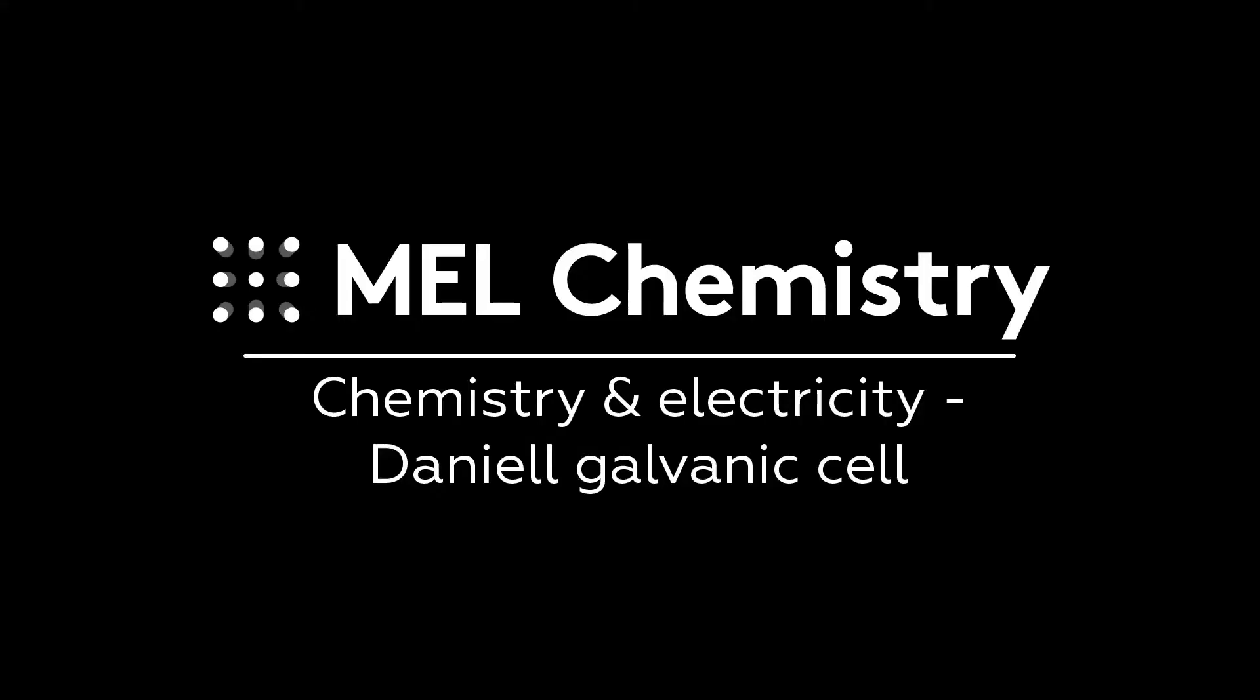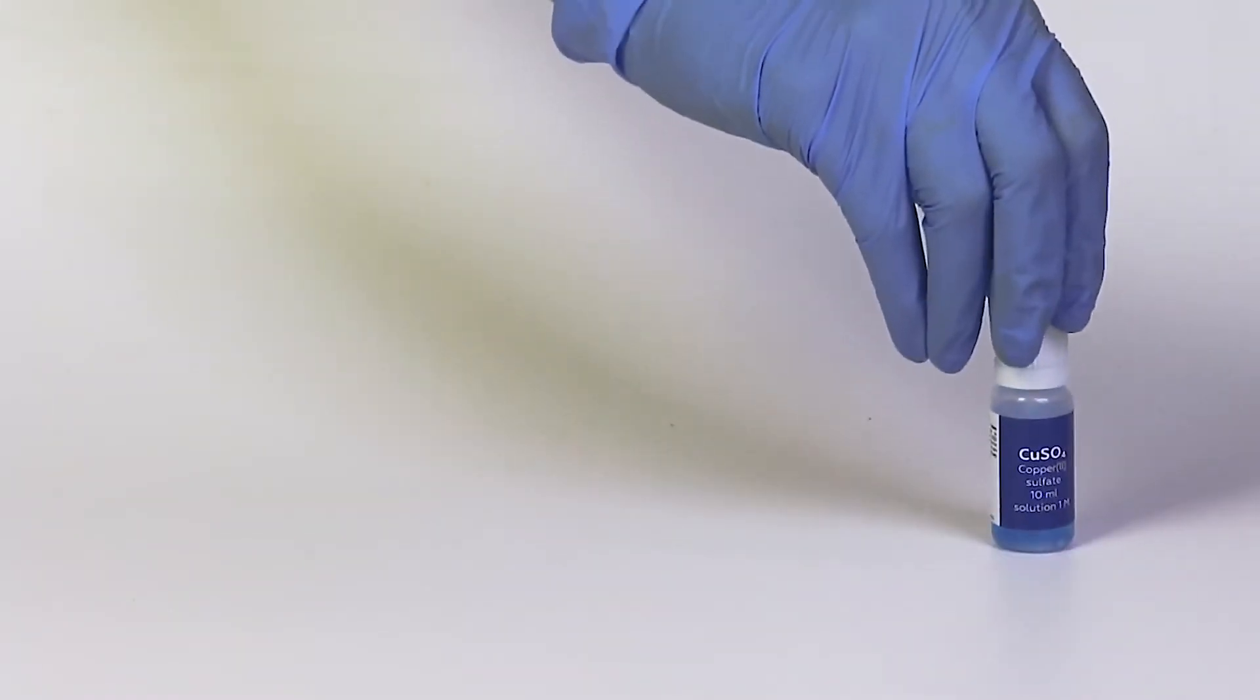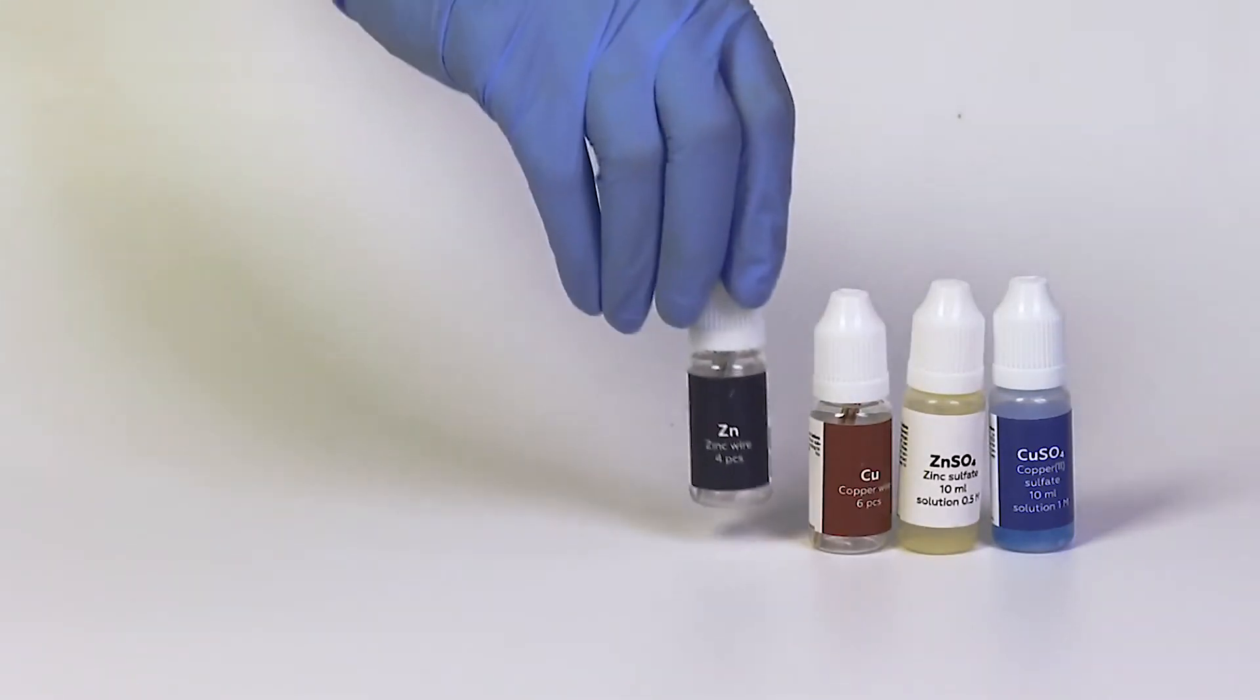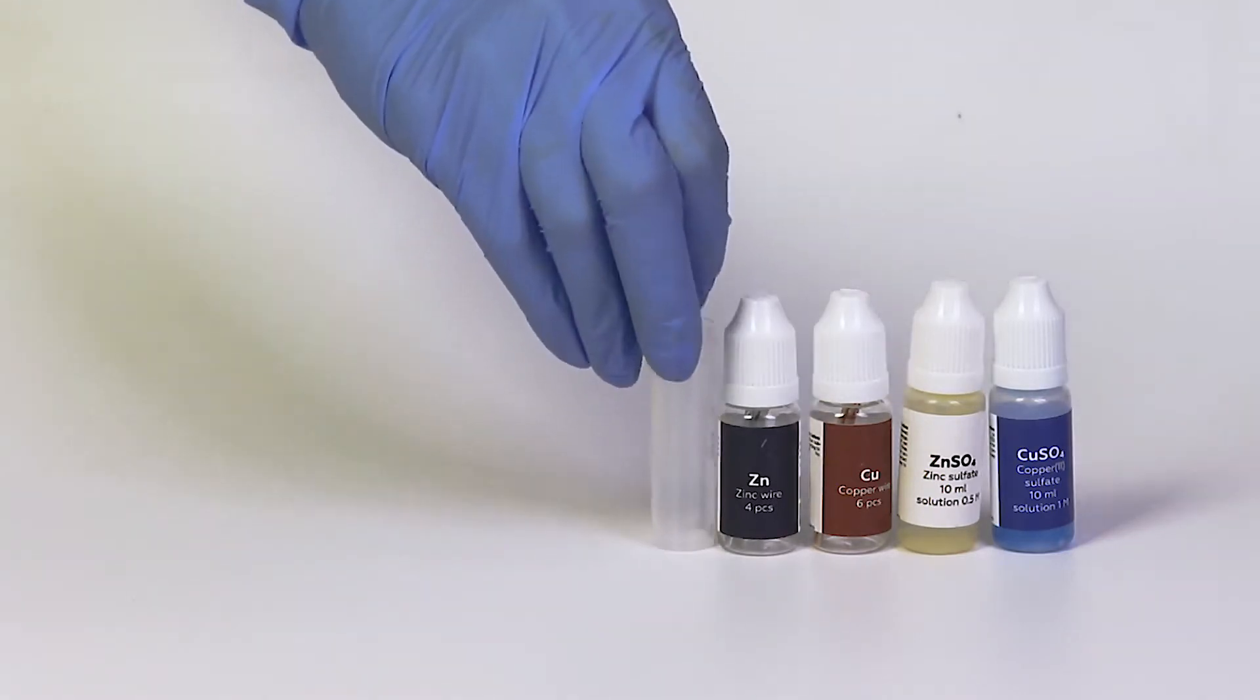For the Daniel Galvanic cell experiment, you'll need solutions of copper sulfate and zinc sulfate, copper and zinc rods, four plastic vials,